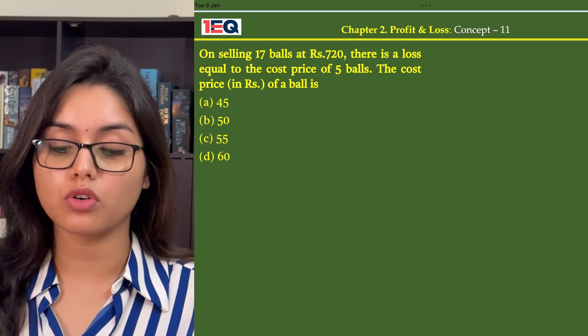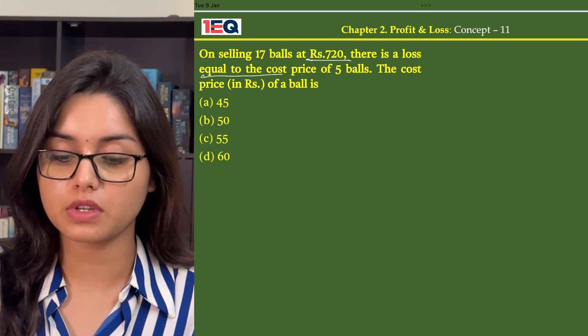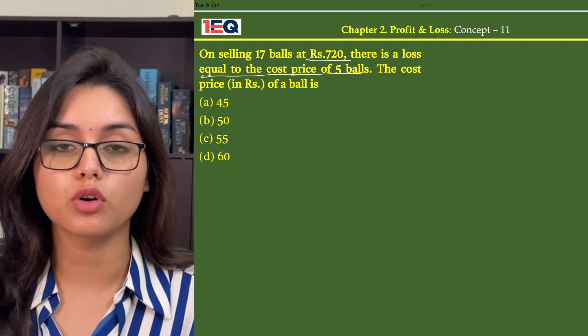On selling 17 balls at Rs. 720, there is a loss equal to the cost price of 5 balls. The cost price of a ball is: